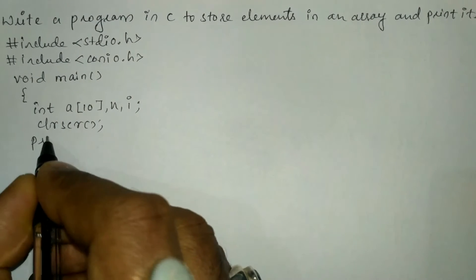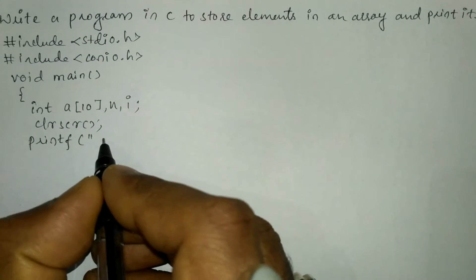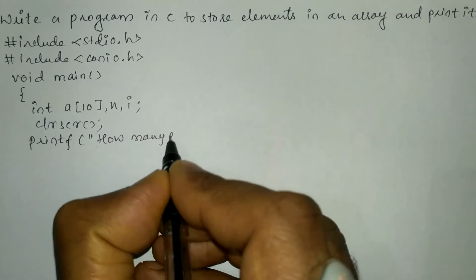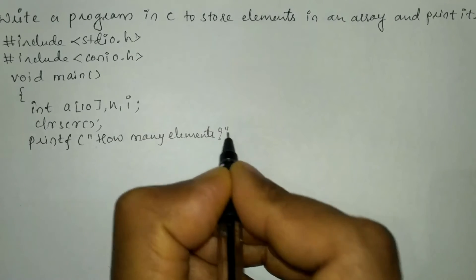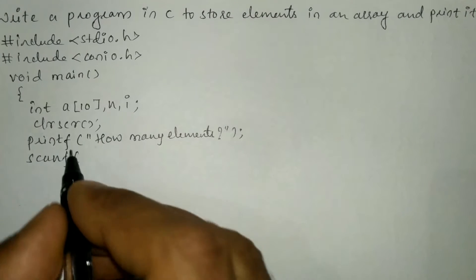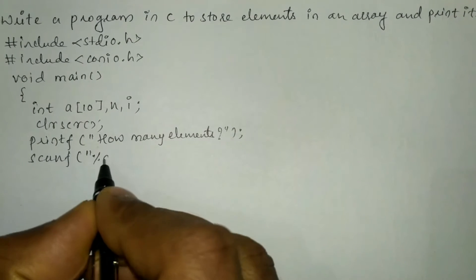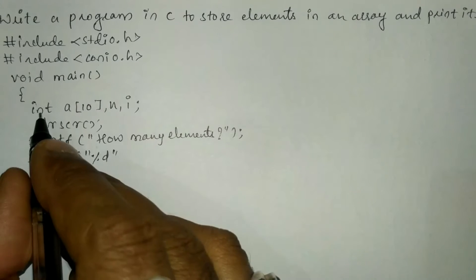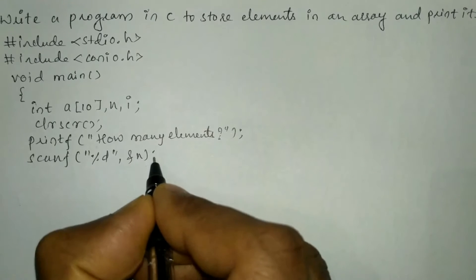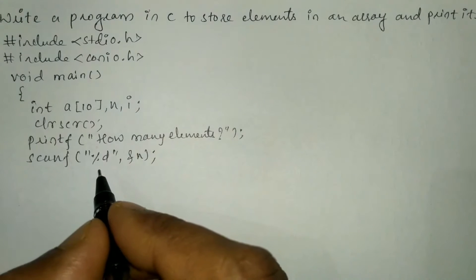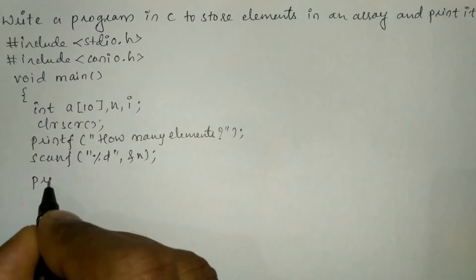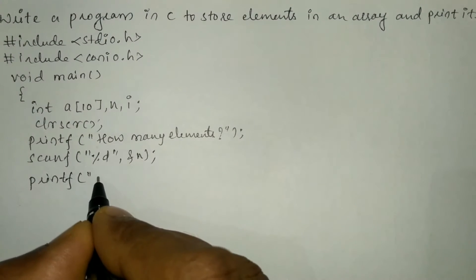Now we will ask the user to enter how many elements using a printf statement. We'll write 'how many elements' inside double quotation marks and put a semicolon. We are going to receive the response from the user through the keyboard using a scanf statement, with the %d format specifier associated with integer type of data, and we'll use ampersand of n. Now we are going to receive the elements from the user through the keyboard using a printf statement.